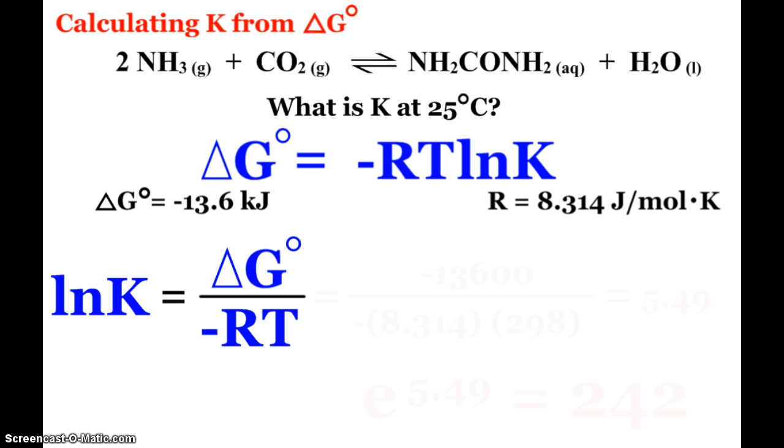First off here's that reaction again, ammonia and carbon dioxide. So what is the equilibrium constant at 25 degrees celsius? Well earlier we had calculated delta G for this reaction and it's negative 13.6 kilojoules.